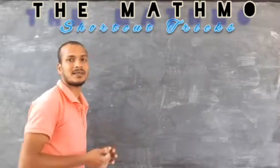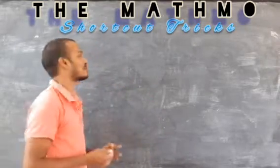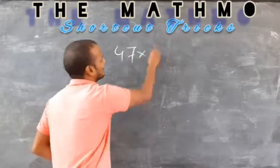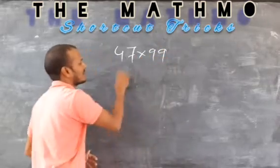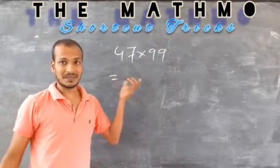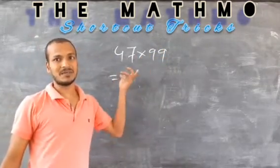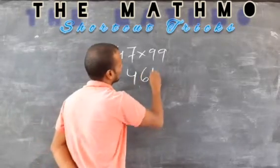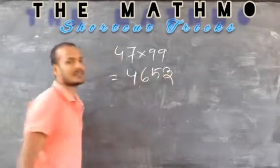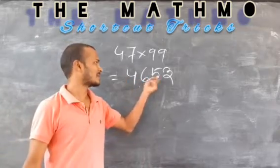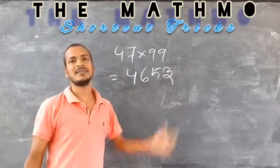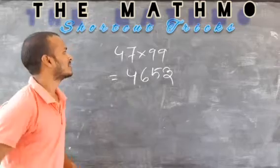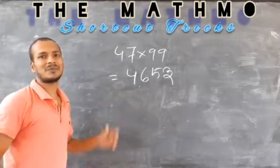So how to do that? Let us take an example: 47 into 99. So how fast can you do this? It's 4653. So how can you get this? Let us see the procedure.